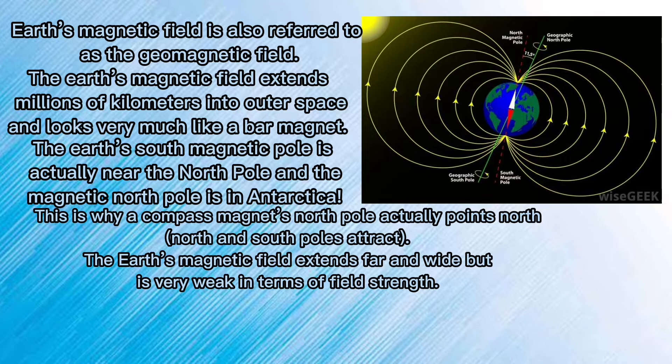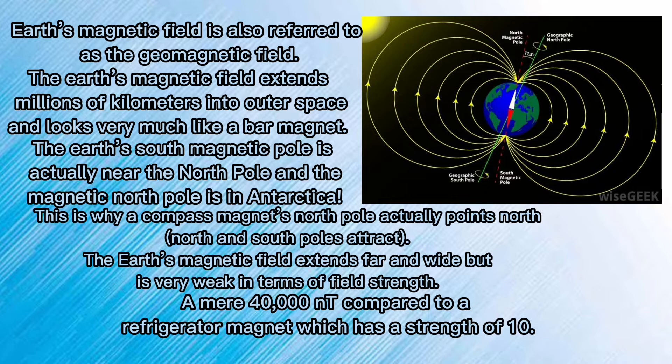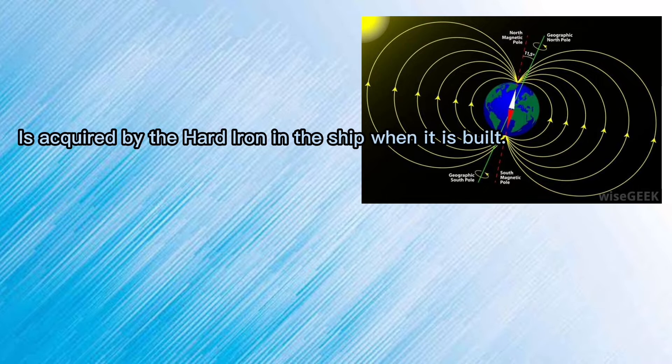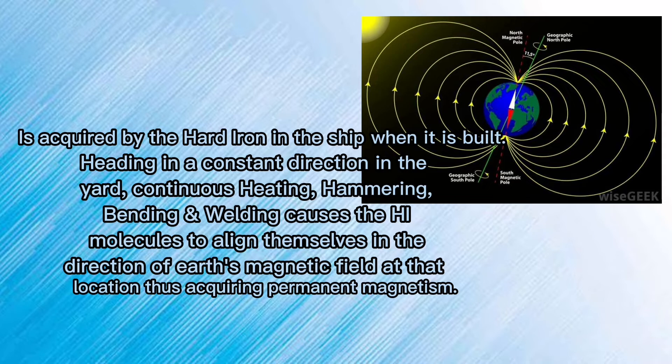Around 40,000 nanoteslas compared to a refrigerator magnet which has a strength of 10. It's acquired by the hard iron in the ship when it's built, heading in a constant direction in the yard. Continuous heating, hammering, bending, and welding causes the iron molecules to align themselves in the direction of the Earth's magnetic field at the location, thus acquiring permanent magnetism.